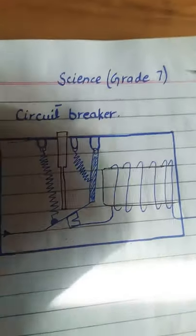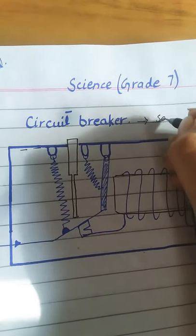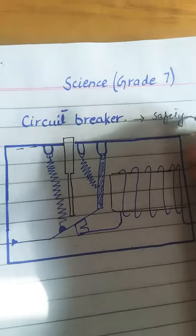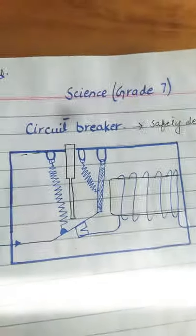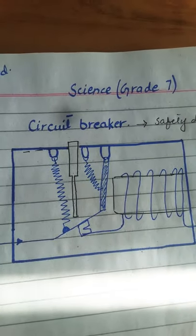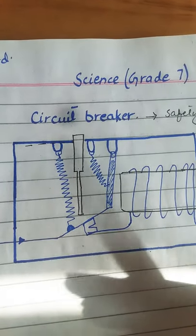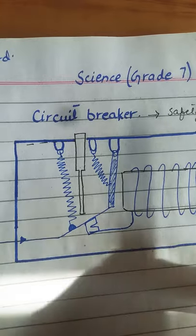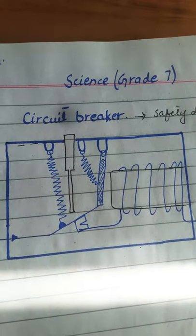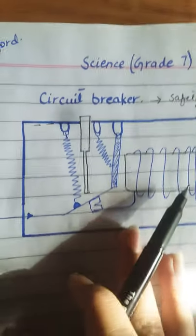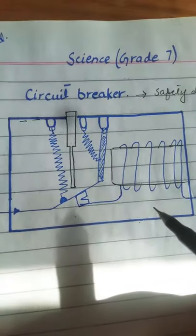The circuit breaker is actually an automatic safety device in our homes. If the current is too high, then the circuit breaker cuts off the electricity, so our home appliances will be safe from high current.